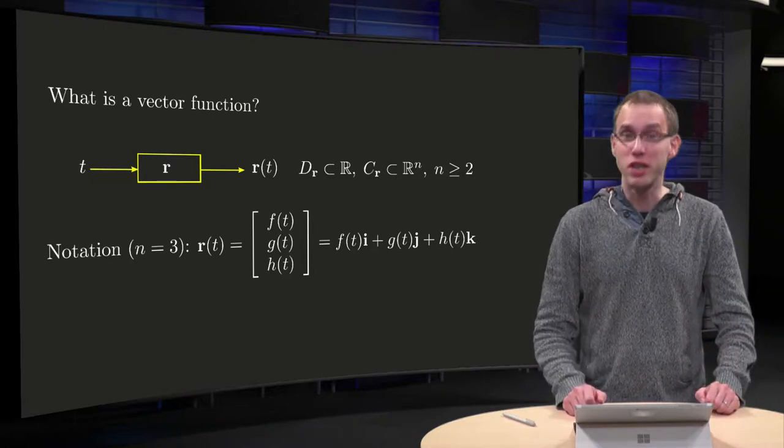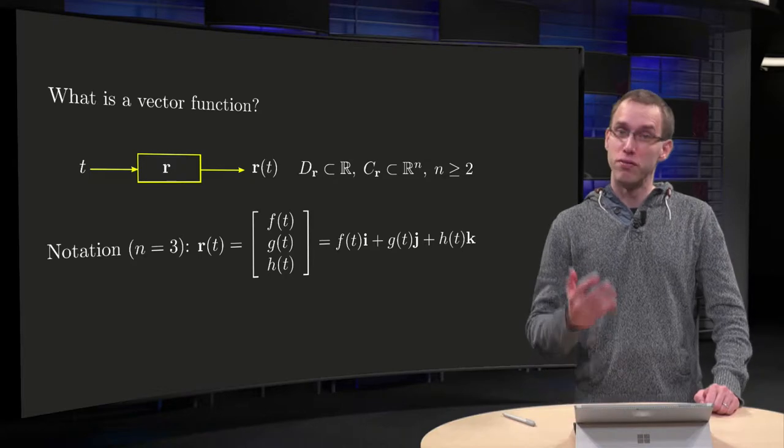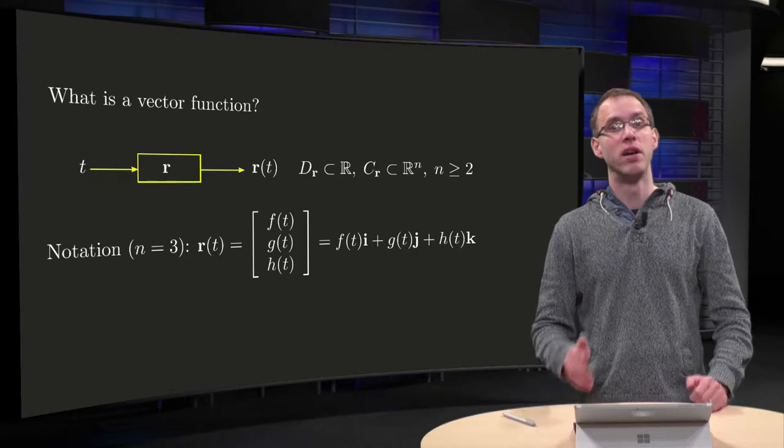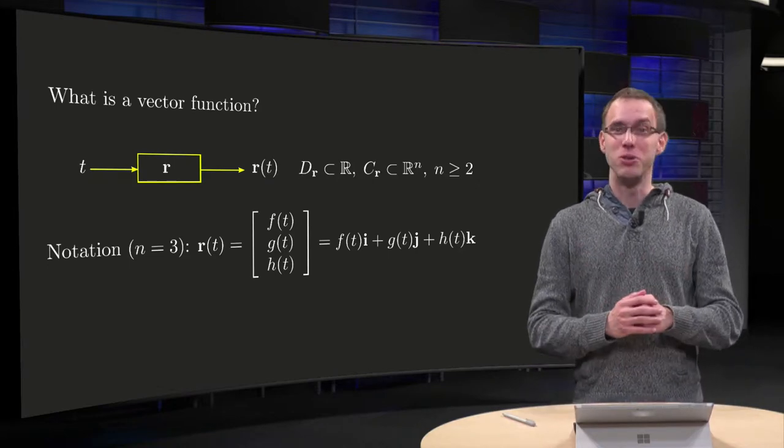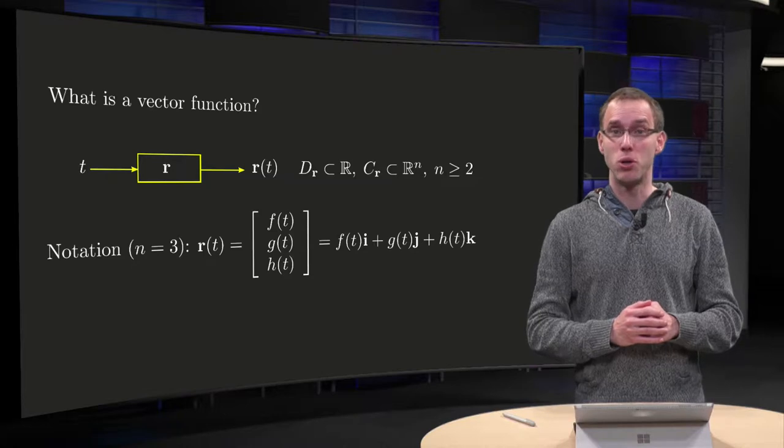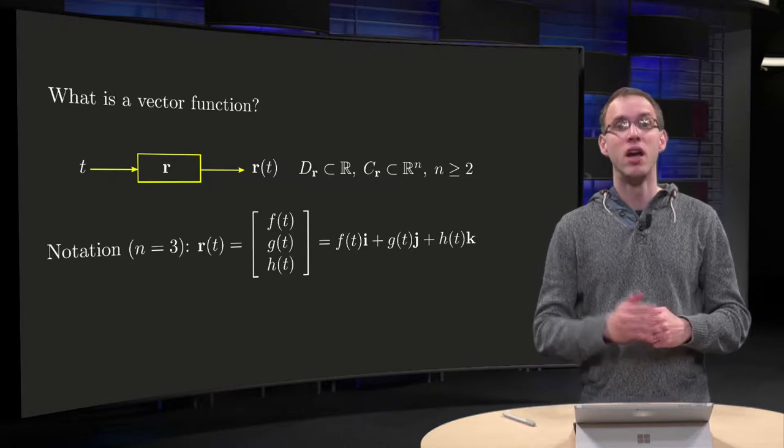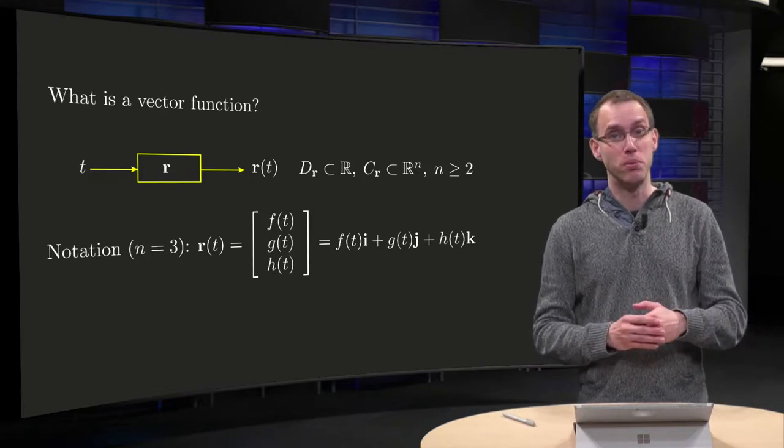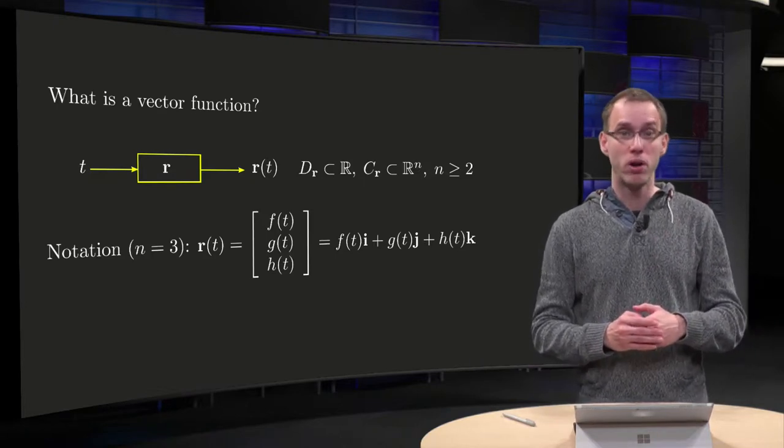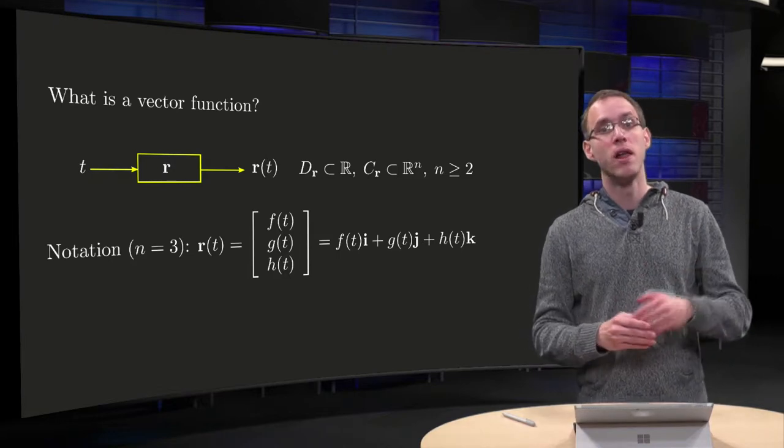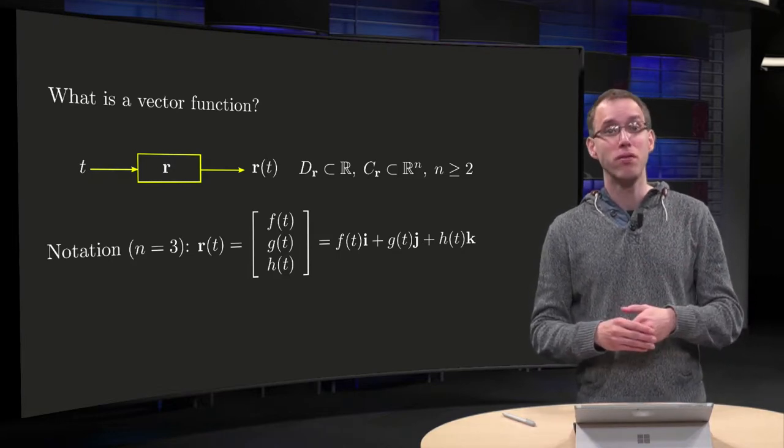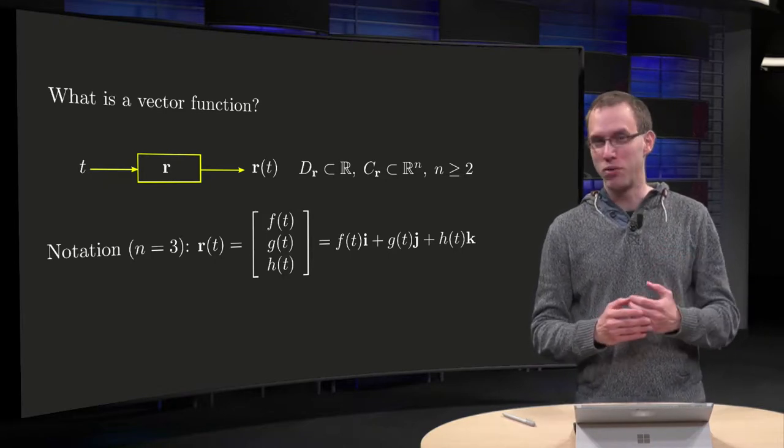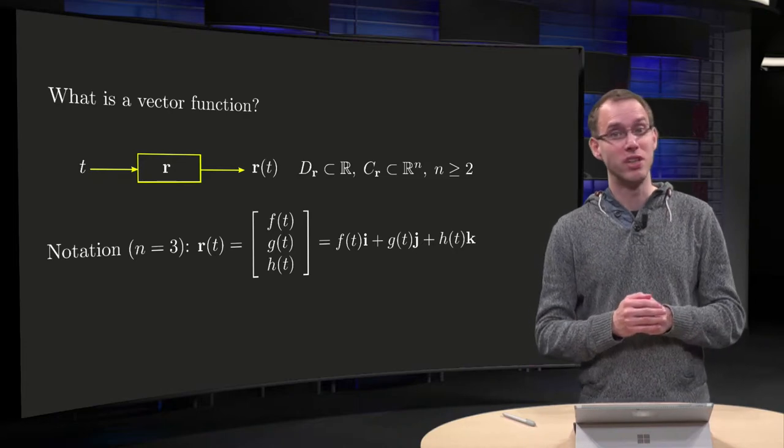You have already learned a lot of single variable functions. Functions with domains, some subset of R, and R as codomain. We are now ready to generalize the concept of a function to so-called vector functions. We will leave the domain as it is, but now our codomain will be some subset of R² or R³, or even higher if you want. So the outcomes of our functions will be vectors instead of numbers. How does that work? Watch the introduction in this video.